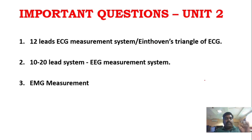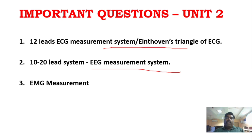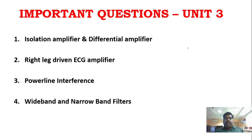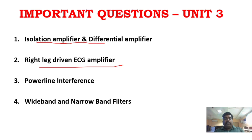There is another question in the second question paper. Similarly in Unit 3, as mentioned, in the 2 questions given you can definitely answer one. That is isolation and differential amplifiers, and then right-leg-driven ECG amplifier. Power line interference appears one or two times, and wide band and narrow band filters is another question.